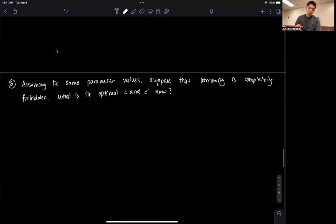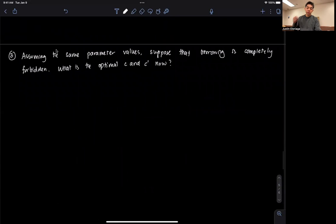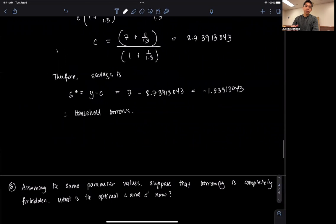So the last question is, assuming the same parameter values, suppose that borrowing is completely forbidden. What is the optimal C and C prime now? Well, that's sort of simple, it's just an intuitive answer. Given that we found out that the optimal savings is basically a negative number,